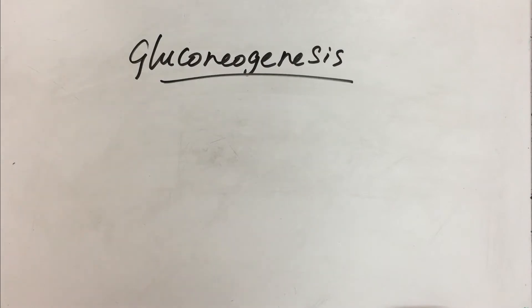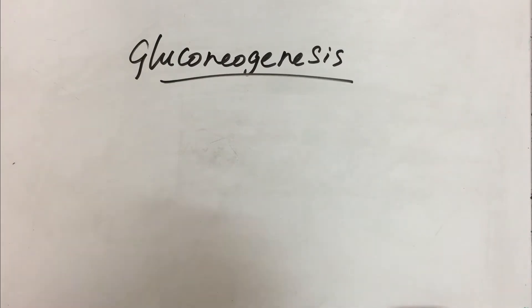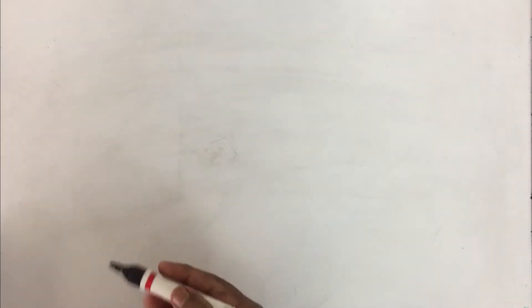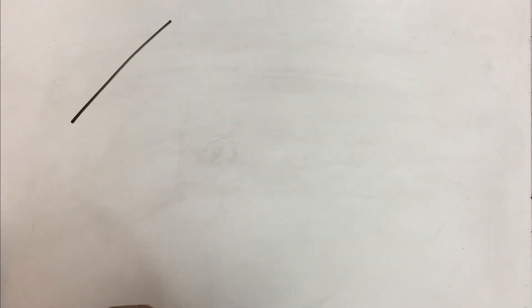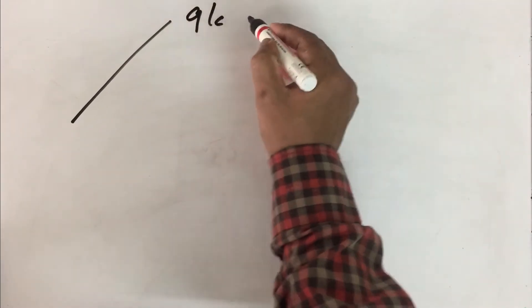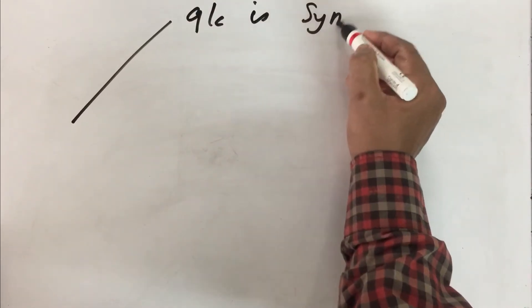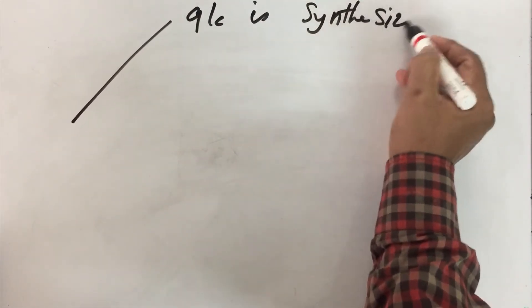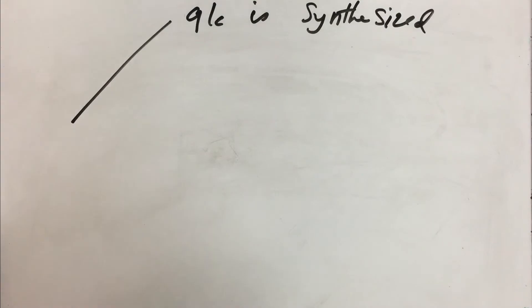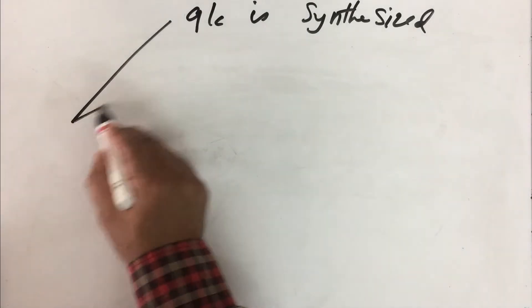In many ways gluconeogenesis is a reversal of glycolysis. Why do I say that it is a reversal of glycolysis? There can be several arguments proposed. Number one is glucose is synthesized. Whereas in glycolysis glucose is catabolized, broken down. Here glucose is synthesized.